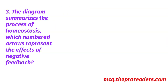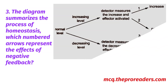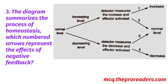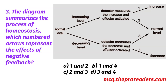The diagram summarizes the process of homeostasis. Which numbered arrow represents the effect of negative feedback? A. 1 and 2. B. 1 and 4. C. 2 and 3. D. 3 and 4. Option C, 2 and 3, is the correct answer.